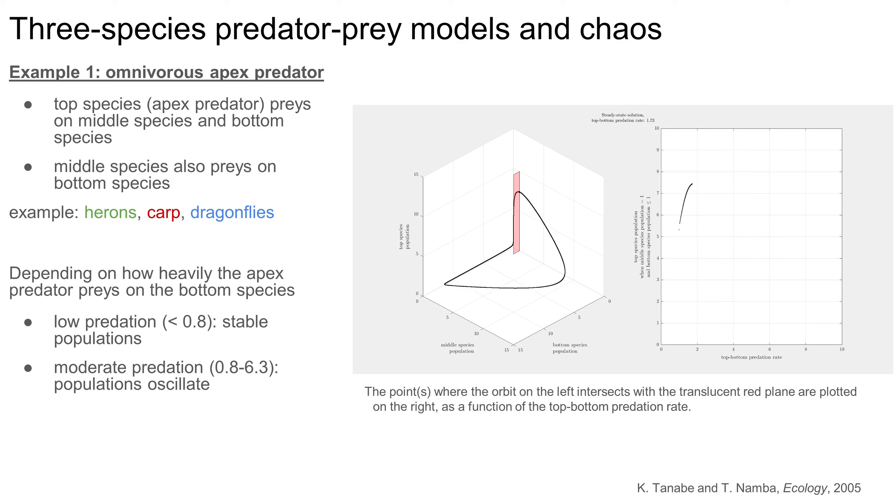You might be wondering why there's a pink rectangle in the phase plot on the left. This pink rectangle has a name. It's called a Poincaré section, and it's another useful tool for studying a wide variety of dynamical systems, from food webs to legged robots. I'm using this Poincaré section to take a snapshot of the population levels every time the system completes another orbit through phase space. When the orbit passes through my Poincaré section, I plot the population of one of the species, in this case the apex predator, the heron. This helps me keep track of qualitative changes in the behavior of the food web.